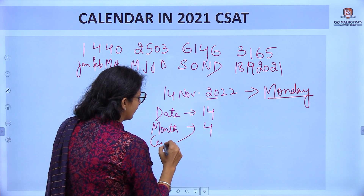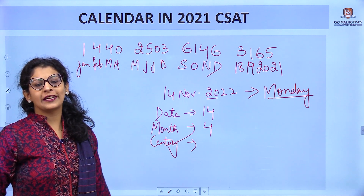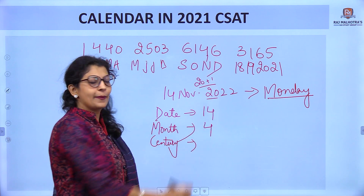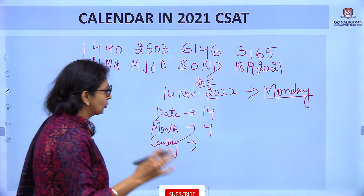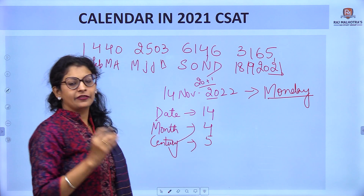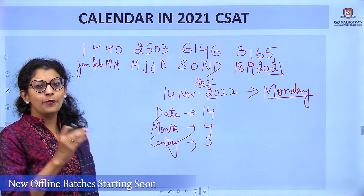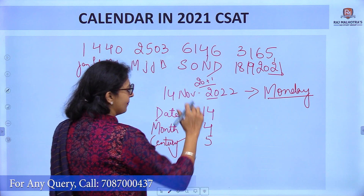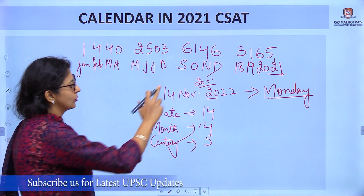Next is century. It is written as 20, but the century currently running is the 21st century. So we have to take the code for 21st century, which is 5. So we write 5 for the century. To summarize: month code for November is 4, century code for 21st century is 5.